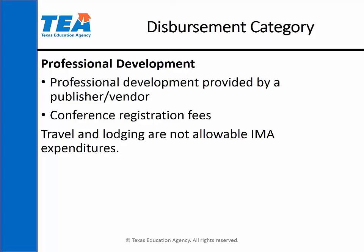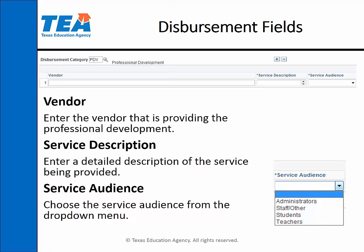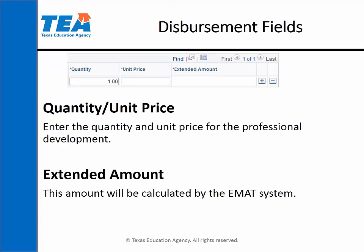For the professional development category, you can request funds for professional development provided by the vendor or publisher and conference registration fees. Travel and lodging are not allowable IMA expenditures. The first field is vendor — enter the vendor providing the professional development. For the service description, enter a detailed description of the service being provided and choose the service audience from the drop-down menu. Enter the quantity and unit price, and the extended amount will be calculated for you.